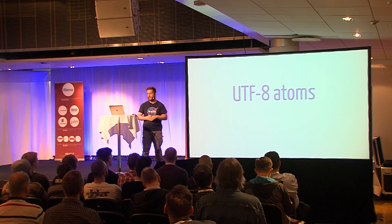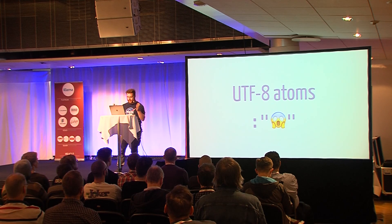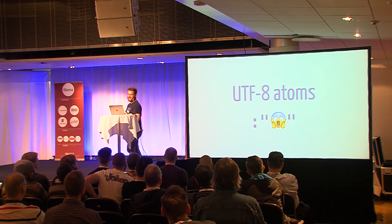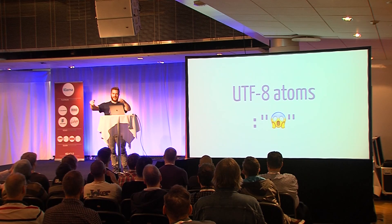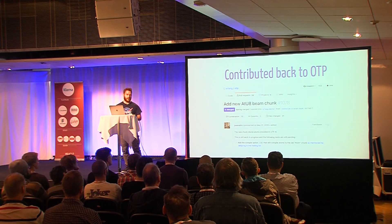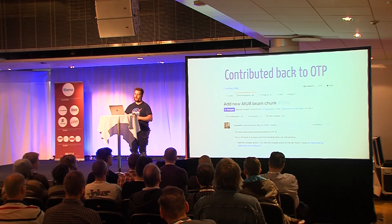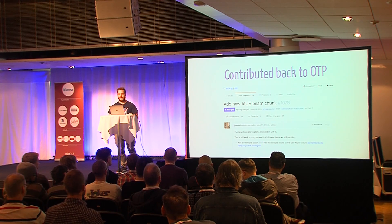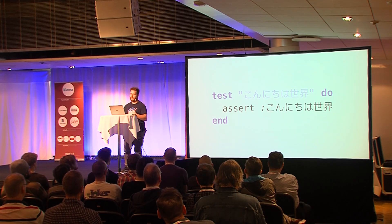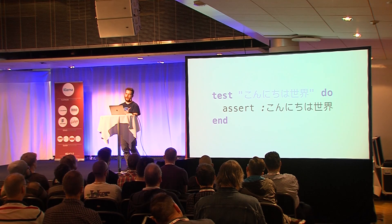The first improvement is UTF-8 atoms. As Kenneth said yesterday, we can do this in OTP 20 — and of course, UTF-8 atoms. We actually contributed this back to OTP, so we were really happy that we were able to improve the whole ecosystem. We're really thankful to the OTP team for all the help and guidance in implementing this. What this means for Elixir is that now you can write test cases where the title is UTF-8, you can write UTF-8 atoms, and if you use a subset of UTF-8 they can be without quotes as well.